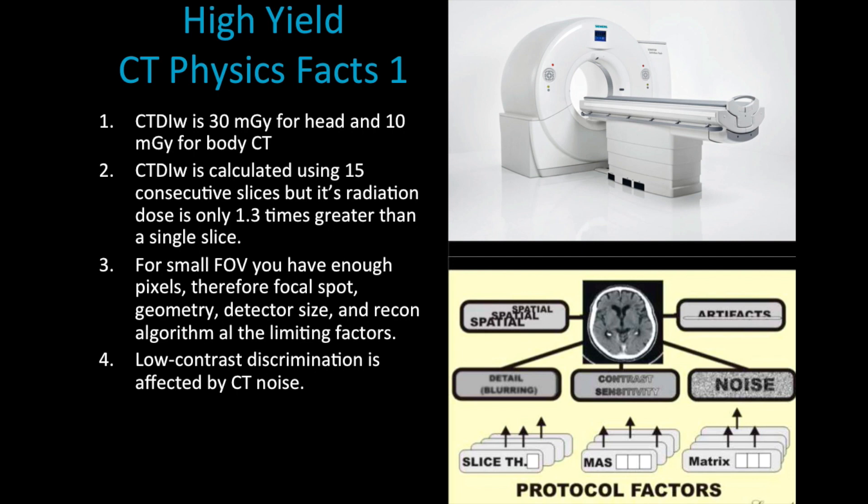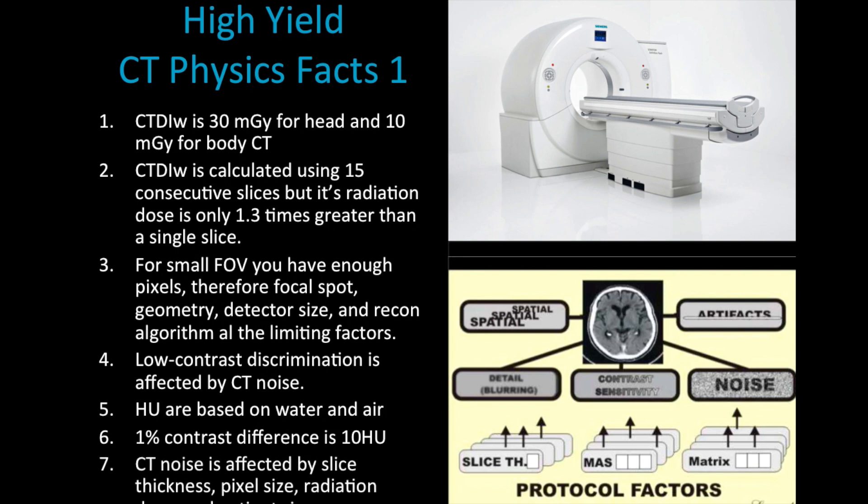Hounsfield units, as you might know, are based on the measurements of water and air. We normalize water to represent a value of zero Hounsfield units and air represents a value of minus one thousand. One percent contrast difference is equivalent to ten Hounsfield units, and that's just a fact you should know. So every time you see a ten or twenty difference in Hounsfield units, you know you're dealing with one or two percent contrast difference.